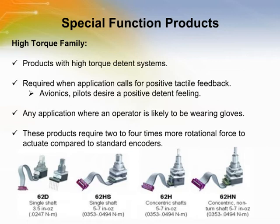The 62B encoder has a pull-to-actuate feature in its shaft in addition to the typical push button feature. The pull-to-actuate shaft is almost impossible to actuate accidentally. A customer can use the product to incorporate push for off or pull for on, or push to enter and pull to reset functionality into their equipment. This product is targeted to the avionics industry.